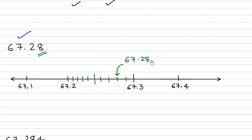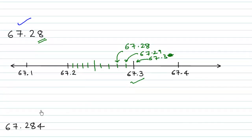So this is 67.28. The next one would be 67.29 and then the next one would be 67.30. And as we know the zeros towards the end of the decimal place can be ignored so this is indeed 67.3.